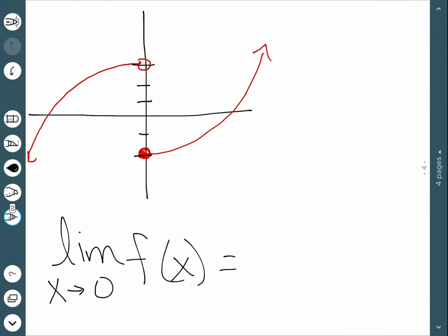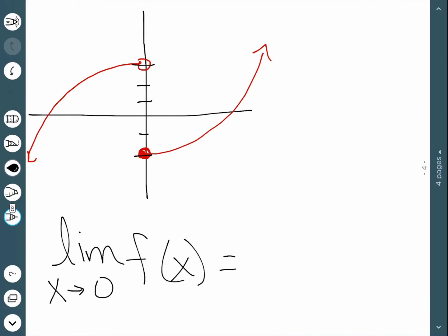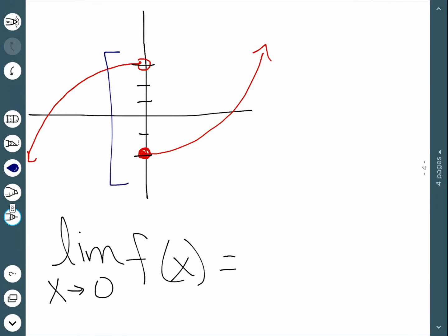Next, let's look at this graph. The limit as f of x approaches 0. Well, we want to look at what happens right around the point 0 and see exactly what our graph is doing. We'll notice on one side it's getting really close to positive 3, and on the other side it's getting really close to negative 2.